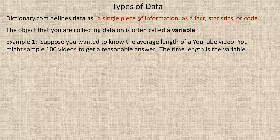In this video tutorial we'll talk about types of data. Dictionary.com defines data as a single piece of information. It can be a fact, some kind of statistic, a code, so it's basically a piece of information.